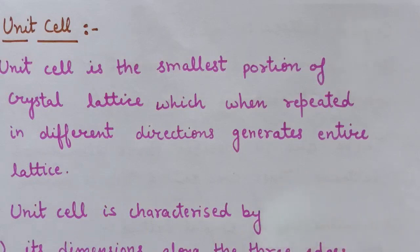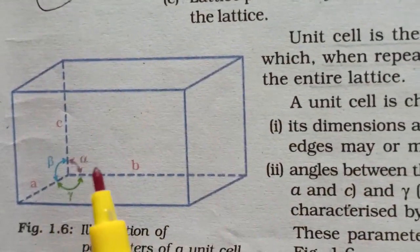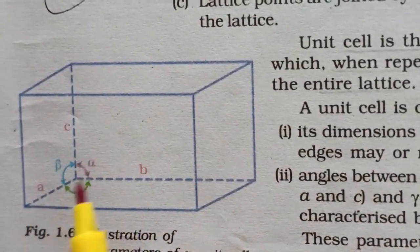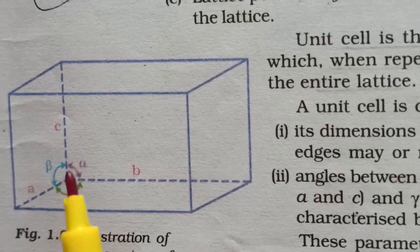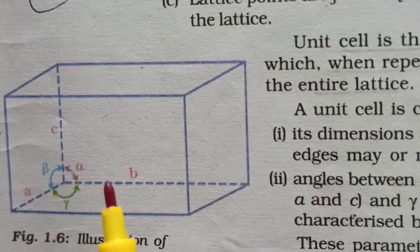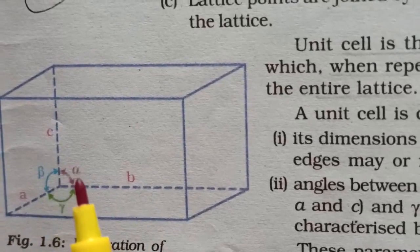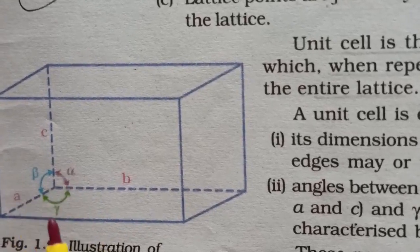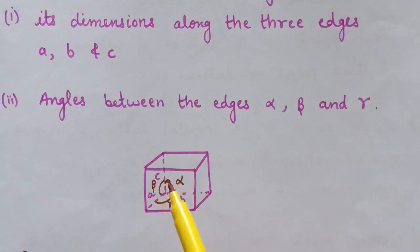The unit cell is characterized by its dimensions and the angles between the edges. Here one unit cell is shown with edges A, B, and C, and the angles alpha, beta, and gamma between these three edges. Therefore, a unit cell is characterized by six parameters: edge lengths A, B, C and angles alpha, beta, and gamma.